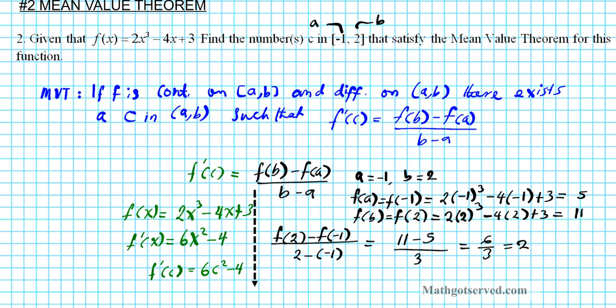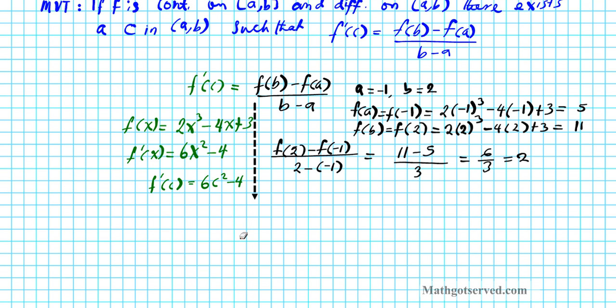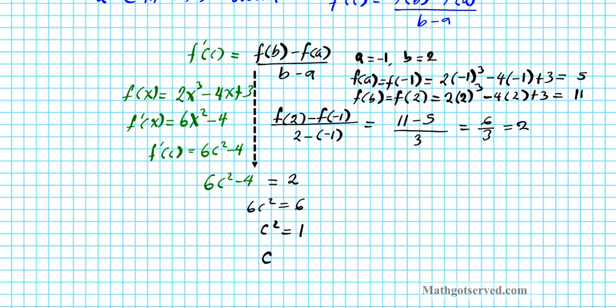This is the instantaneous rate of change. We're going to set them equal to each other. So we're going to be solving for the c, where 6c squared minus 4 equals the average rate of change, 2. Alright, let's go ahead and solve that. You add 4 to both sides. You have 6c squared equals 6. Divide by 6, c squared equals 1. When you take the square root, you're going to have c equals plus or minus the square root of 1, which is plus or minus 1.